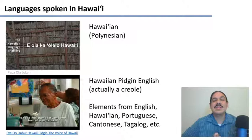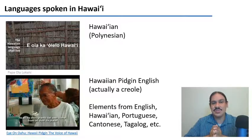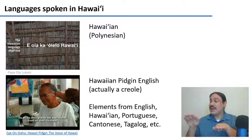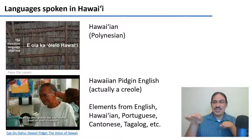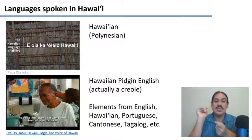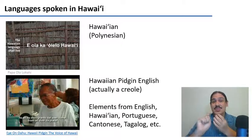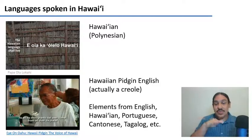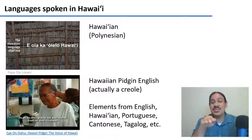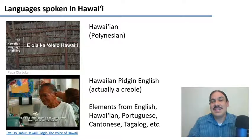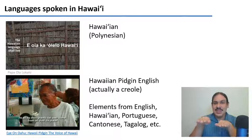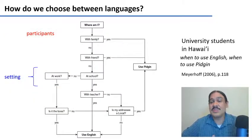Let's look at an example from Hawaii. Hawaii is an archipelago in the Pacific and the original language is Hawaiian, a Polynesian language related to Māori of New Zealand. Over time, a third language developed — a mixture of Hawaiian, English, and the languages of other people who arrived in Hawaii, such as Portuguese, Cantonese, Tagalog, and Japanese speakers who came to work in sugar cane plantations. This mixture created a new language called Hawaiian Pidgin English, which is actually a Creole, though speakers call it simply Pidgin. So many people in Hawaii speak both English and Hawaiian Pidgin English.